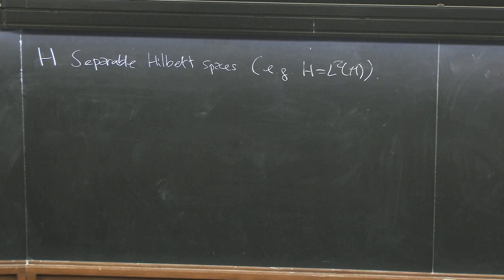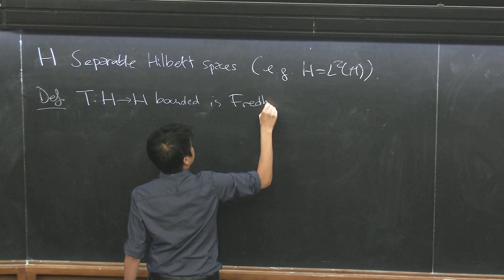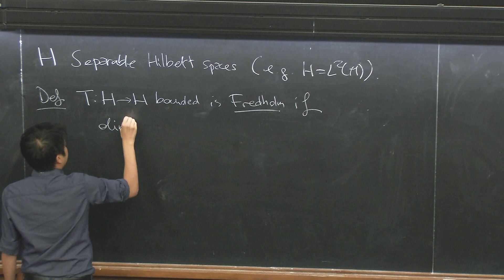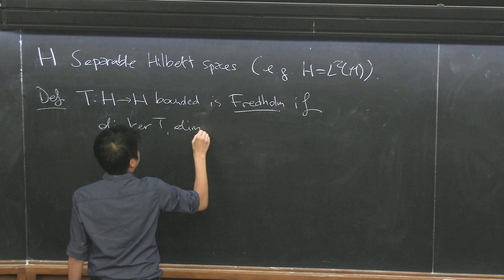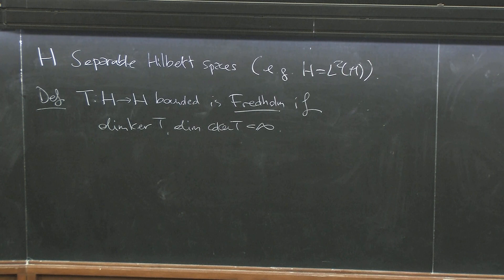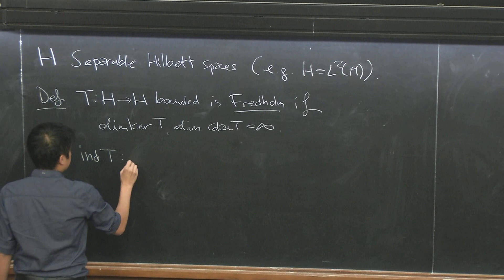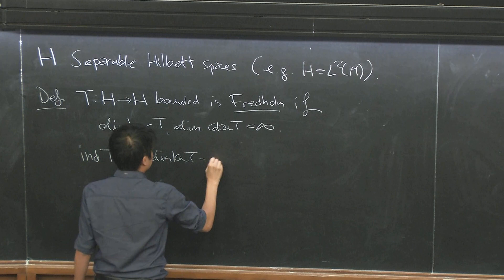We always have a nice compact manifold. Recall the definition: you have an operator T which is bounded and is Fredholm if both the dimension of the kernel and the dimension of the co-kernel are finite. The index is defined to be the dimension of the kernel minus the dimension of the co-kernel. This is an integer.